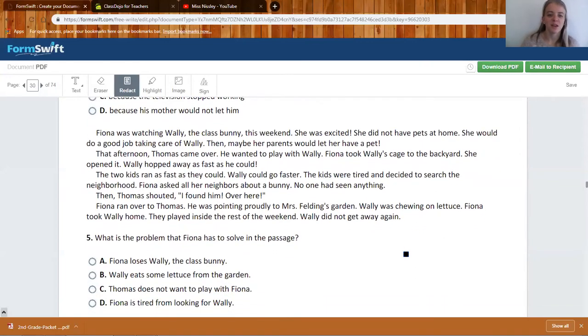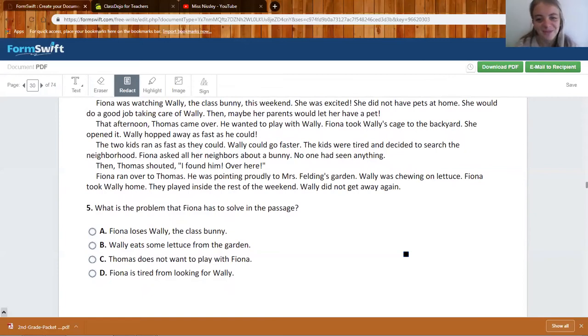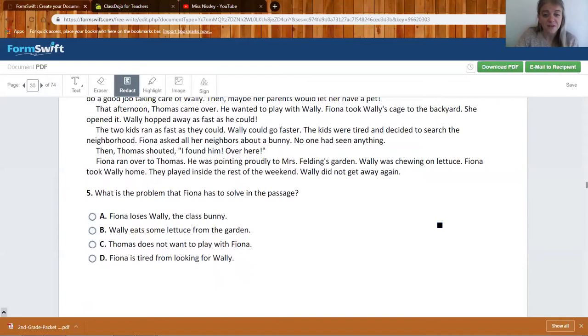Fiona was watching Wally, the class bunny, this weekend. She was excited she did not have pets at home. She would do a good job taking care of Wally. Then, maybe her parents would let her have a pet. That afternoon, Thomas came over. He wanted to play with Wally. Fiona took Wally's cage to the back yard. She opened it. Wally hopped away as fast as he could. The two kids ran as fast as they could. Wally could go faster. The kids were tired and decided to search the neighborhood. Fiona asked all over about the neighbor's bunny. No one had seen anything. Then Thomas shouted, I found him over here. Fiona ran over to Thomas. He was pointing proudly at Mrs. Felding's garden. Wally was chewing on lettuce. Fiona took Wally home. They played inside the rest of the weekend. Wally did not get away again.